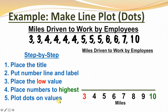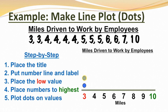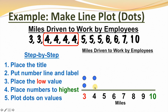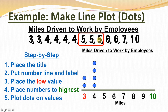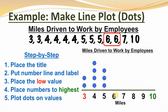Step 5, plot dots on values. Starting at three — there are two threes, so we'll put two dots. This means there were two employees that drove three miles to work. Moving to four — there are four fours, so we'll put four dots. There were four employees that drove four miles to work. For five — there are three fives, so we'll put three dots. There are three employees that drive five miles to work. And for six — there are two sixes, so we'll put two dots on top of six. There are two employees that drive six miles to work.